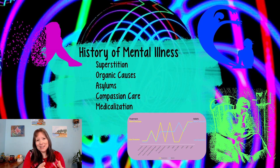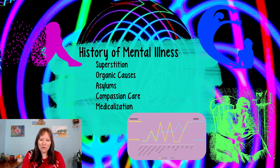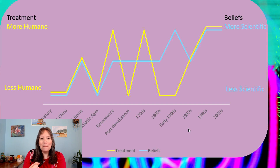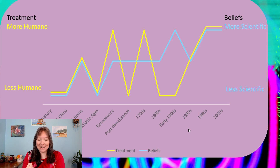As we move to the 1900s, we started to move into rapid medicalization. There's a graph that helps explain this in more detail. The yellow line shows how we view things as more or less humane over time, and the blue line shows how we view mental illness as more or less scientific. In prehistory, in ancient Egypt and China, we didn't understand anything through a scientific lens, and people were not treated very well.